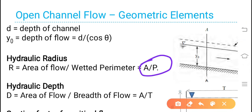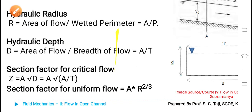Hydraulic depth, denoted by D, is the ratio of area of flow to top width of channel, that is capital A by capital T. Section factor for critical flow Z is equal to A multiplied by square root of hydraulic depth, that is A multiplied by square root of capital A upon capital T. Section factor for uniform flow is equal to A multiplied by hydraulic radius to the power of 2/3.